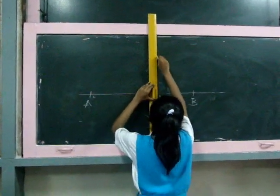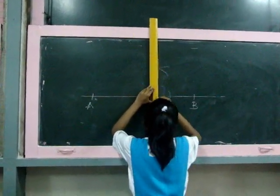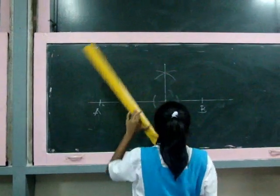Step 4: Join the intersection point to M. This line is perpendicular to AB.